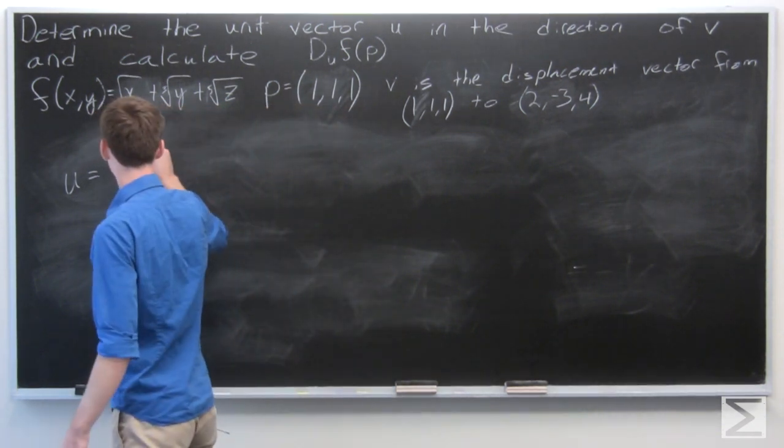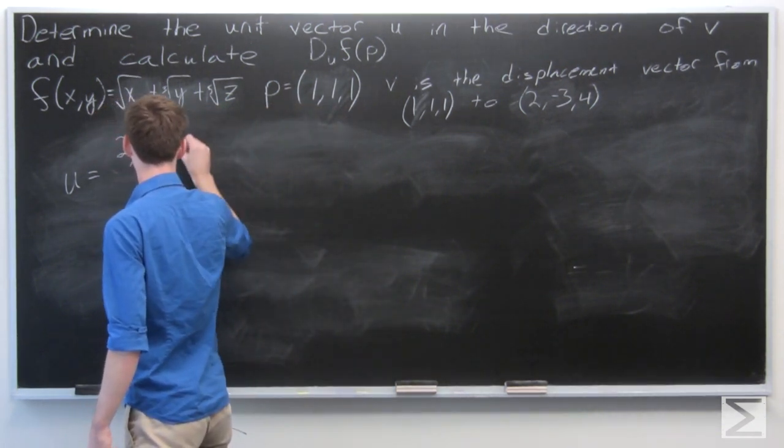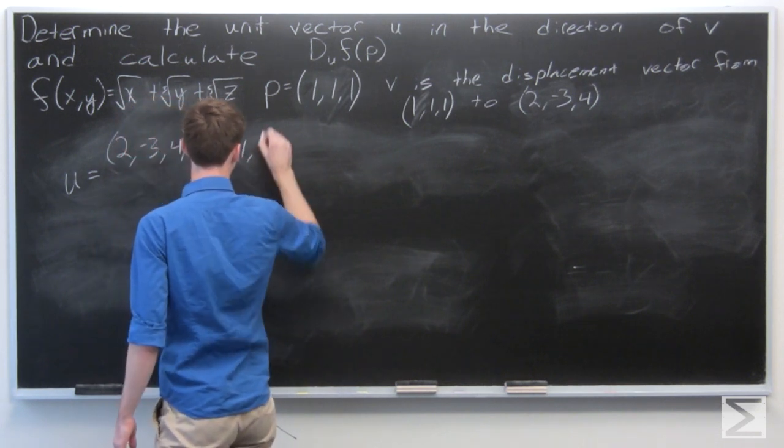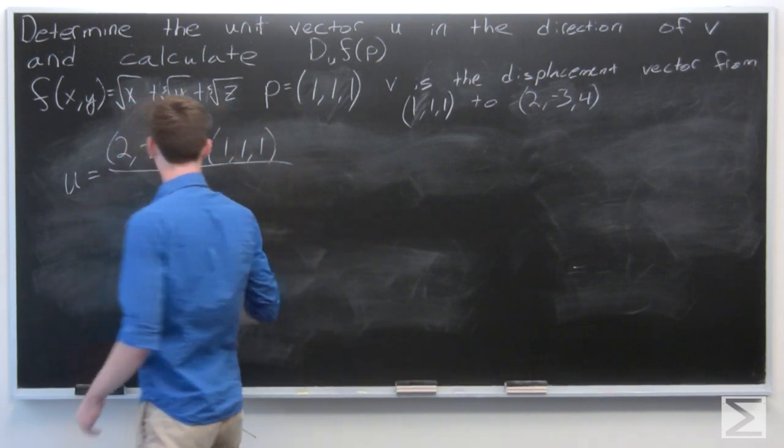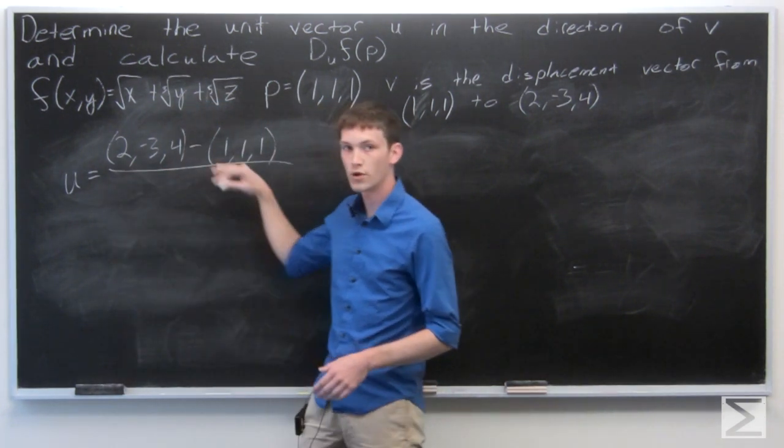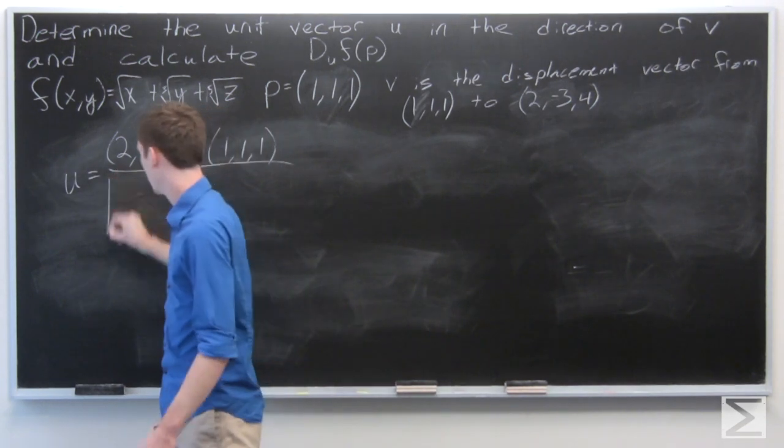So u is going to be in the direction of (2,-3,4) minus (1,1,1), and then we'll normalize it.